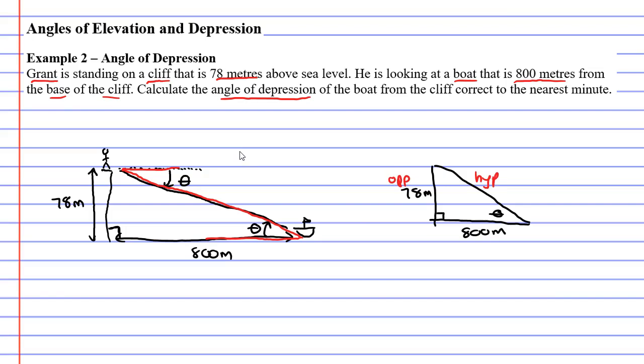hypotenuse is opposite the right angle, and our adjacent is the 800 meters. So we'll cross off hypotenuse, and looking at our acronym SOH CAH TOA, we're going to end up using TOA again.